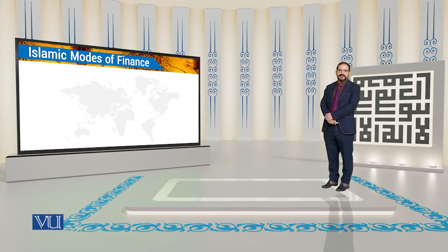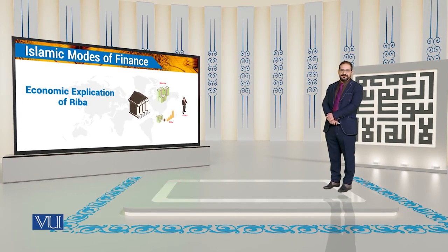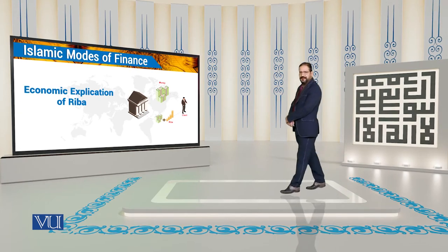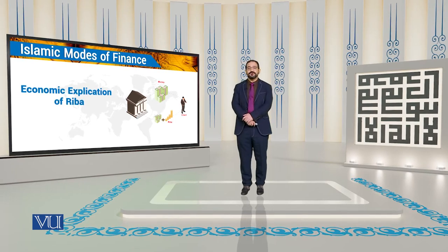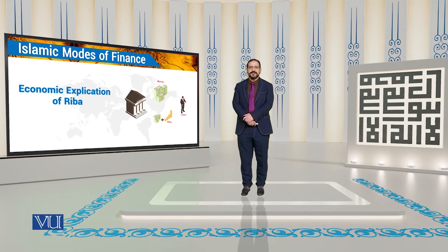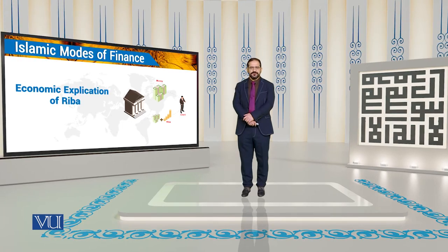This module is entitled 'Economic Explication of RIBA.' RIBA, or its prohibition, is not a purely economic phenomenon. It is a legal prohibition which has some economic implications as well. However, because interest plays an integral part in conventional economics, in conventional banking and finance, it is important to look at RIBA and its prohibition in an economic context.